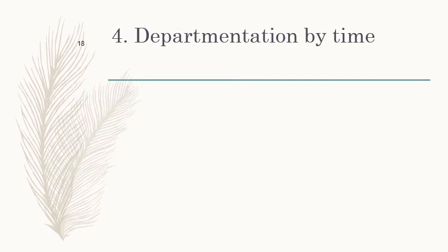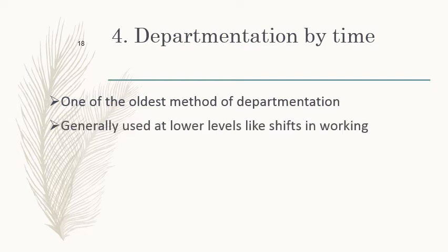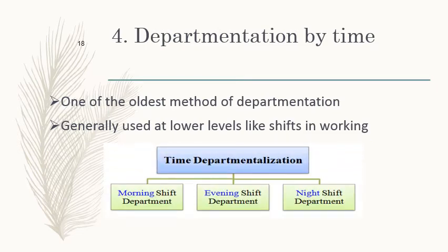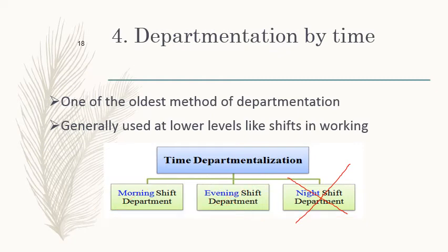The fourth type is departmentation by time, which is the oldest method. The best example is work shifts. Shifts are very popular even today — morning shift, evening shift, and night shift. If production increases, all three shifts are used. If it decreases, night shift is removed, then evening shift if production falls further. Organizations may also rotate shifts weekly based on requirements and customer demand.